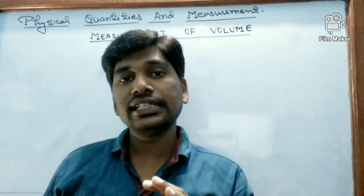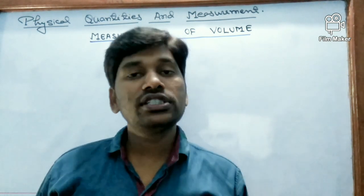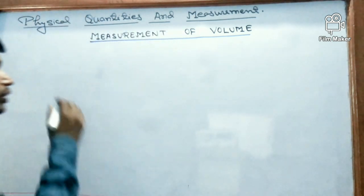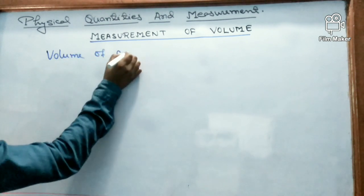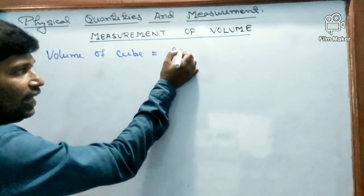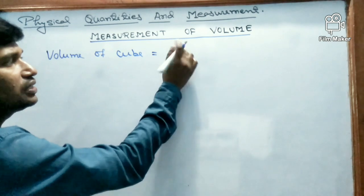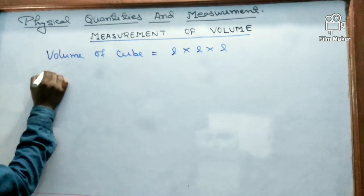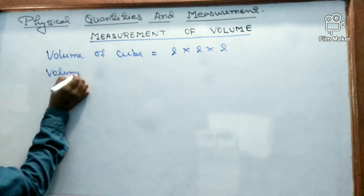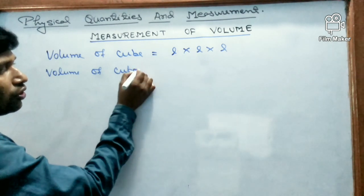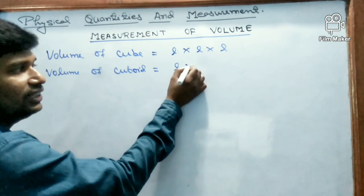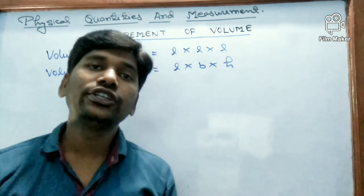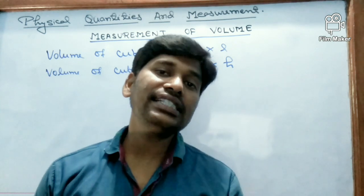Now let us see how we can determine the volume of a regular solid body. The volume of a cube can be found using the formula: volume of cube = L³, or side × side × side. Another regular solid body is the cuboid, and its volume = length × breadth × height. These are the formulas to find the volume of a cube and cuboid.